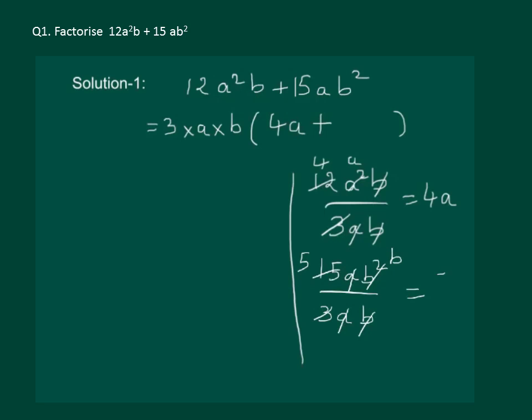So we get 5b and we get 3ab multiplied by 4a plus 5b.